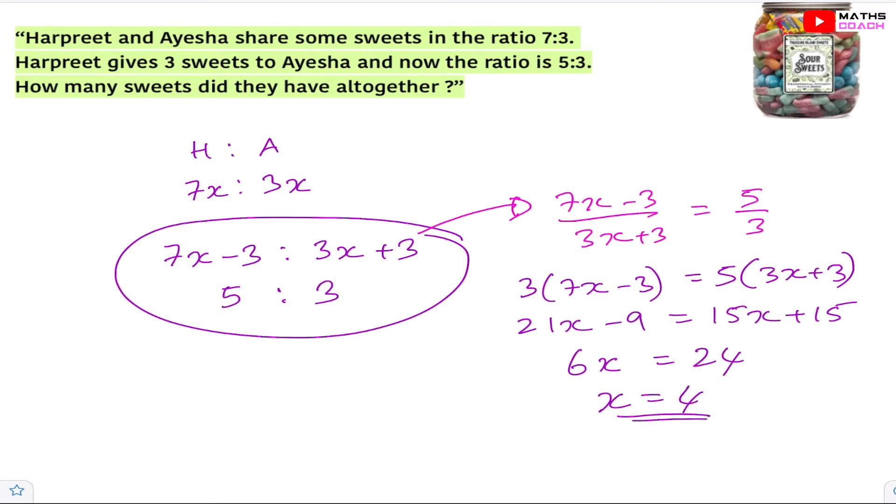Now the question says how many sweets do they have all together? So we can work them out individually. Originally we know that Harpreet was 7 times x and Ayesha was 3 times x. So for Harpreet we'll have 7 times 4 which is 28 sweets. And for Ayesha we can have 3 times 4 which is 12 sweets. So in total, because the question says how many did they have all together, they had a total of 40 sweets.